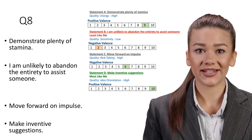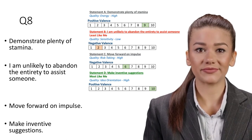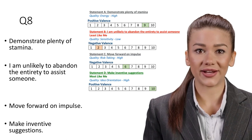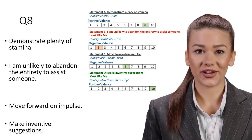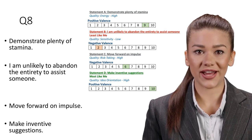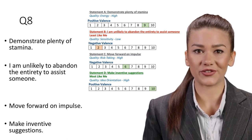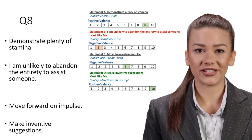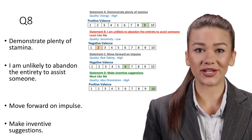Statement B: I am unlikely to abandon the entirety to assist someone. Least like me. Quality: Sensitivity, Low. Co-workers who are supportive and prepared to help can improve their colleagues' job happiness, establish a positive workplace culture, and support their peers' professional growth. Removing this ability from the picture invariably leads to a poor outcome.